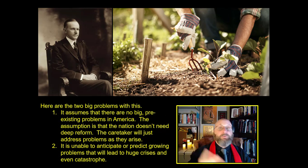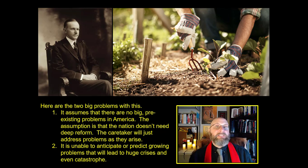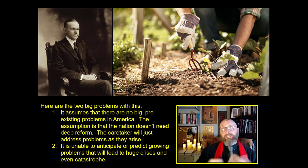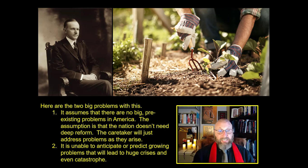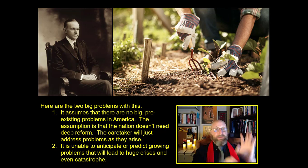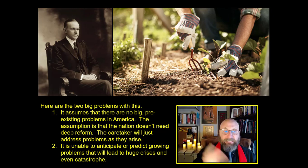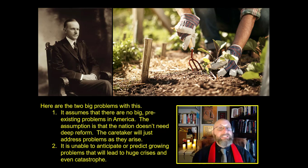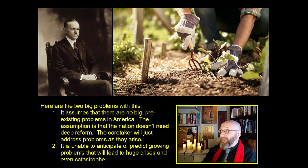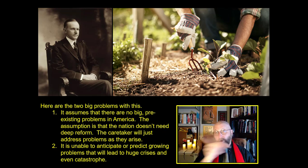But there are two problems with this light-handed caretaker approach. First, it assumes there are no big pre-existing problems in America — that the garden works as-is and the nation doesn't need deep reform anywhere. Second, it is unable to anticipate or predict huge growing problems that will lead to massive crisis and even catastrophe in the future, because it's not a farsighted plan. A caretaker government just addresses problems as they arise.